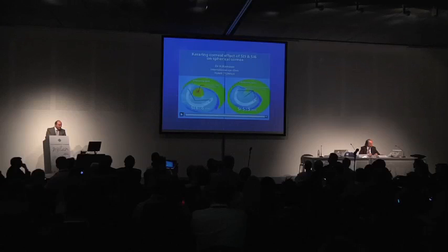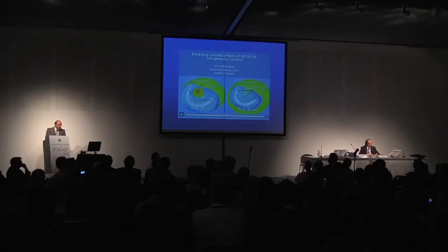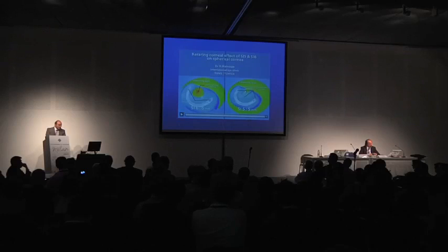With SI5, we have central flattening and peripheral flattening. The peripheral flattening is bigger than the central flattening, and that explains the simultaneous effect on sphere and cylinder with SI5.